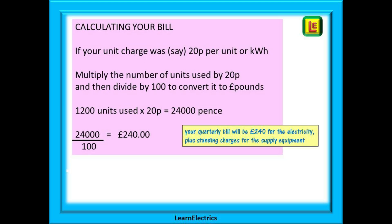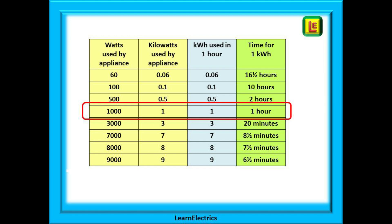How do you go about calculating the cost of electricity you've used? Let's say you've used 1200 kilowatt hours. If your unit charge is 20 pence per unit, multiply the number of units used by 20 pence, then divide by 100 to convert into pounds. So 1200 units times 20 pence is 24,000 pence, and 24,000 divided by 100 gives us a cost of £240.